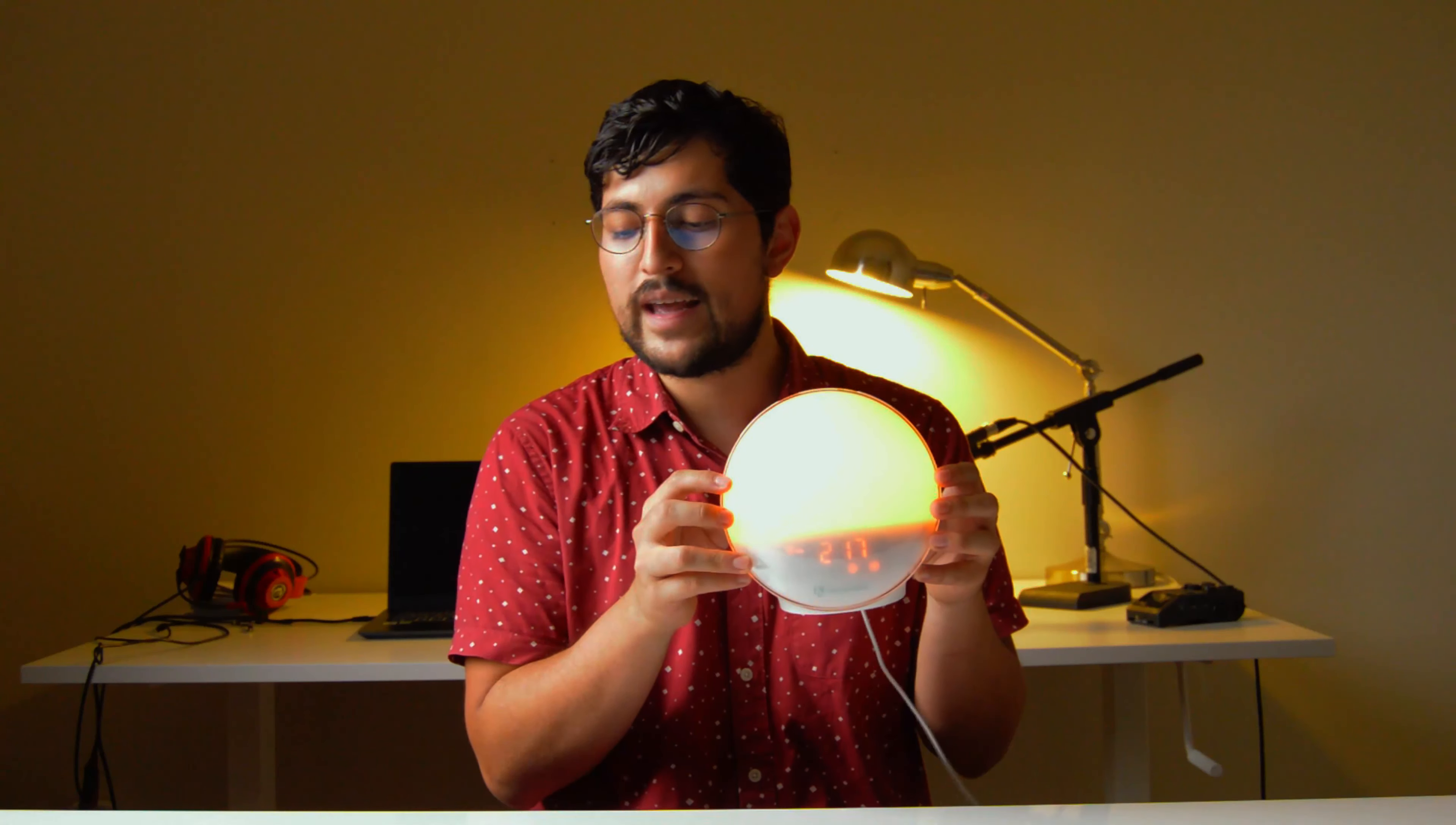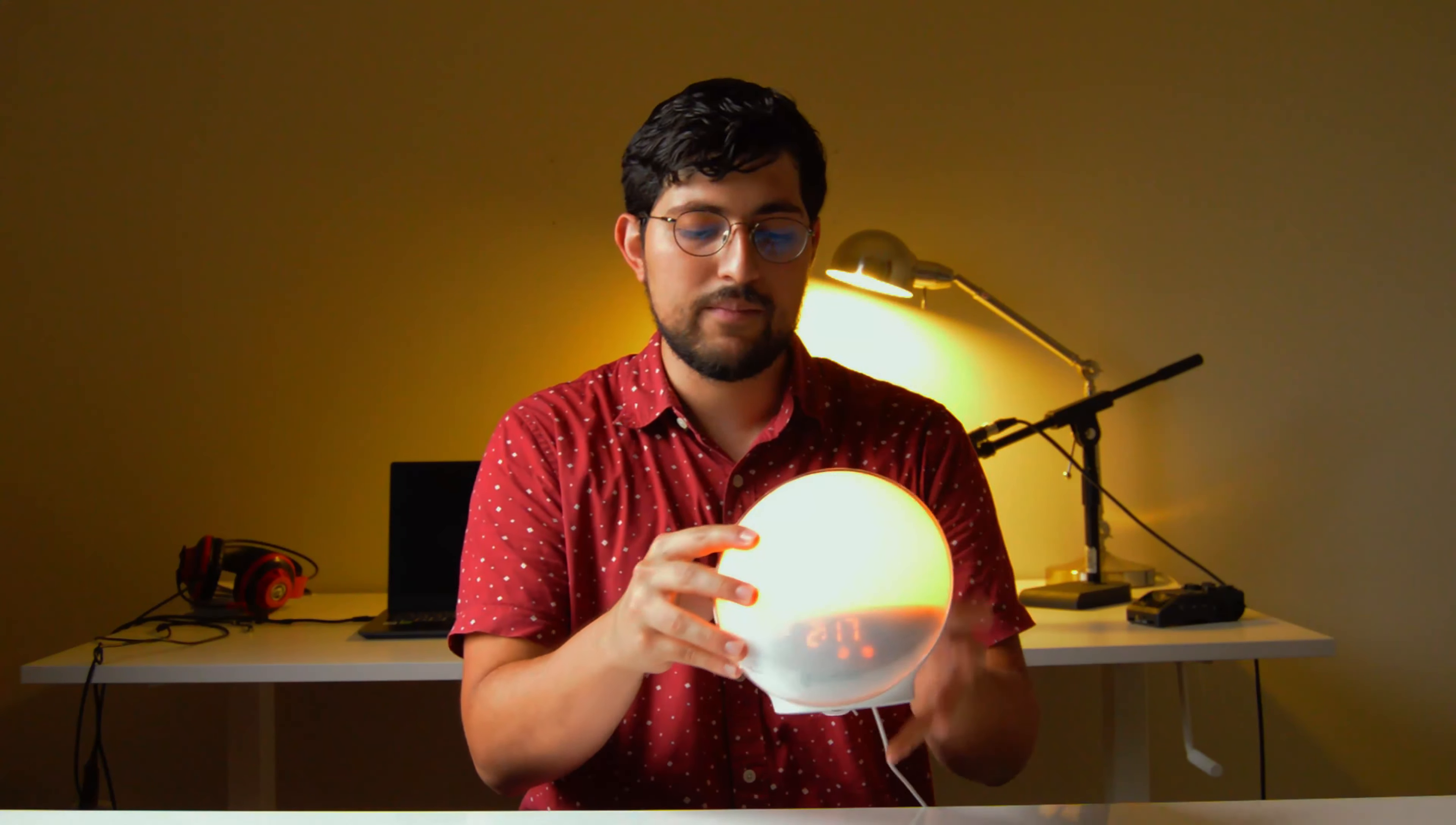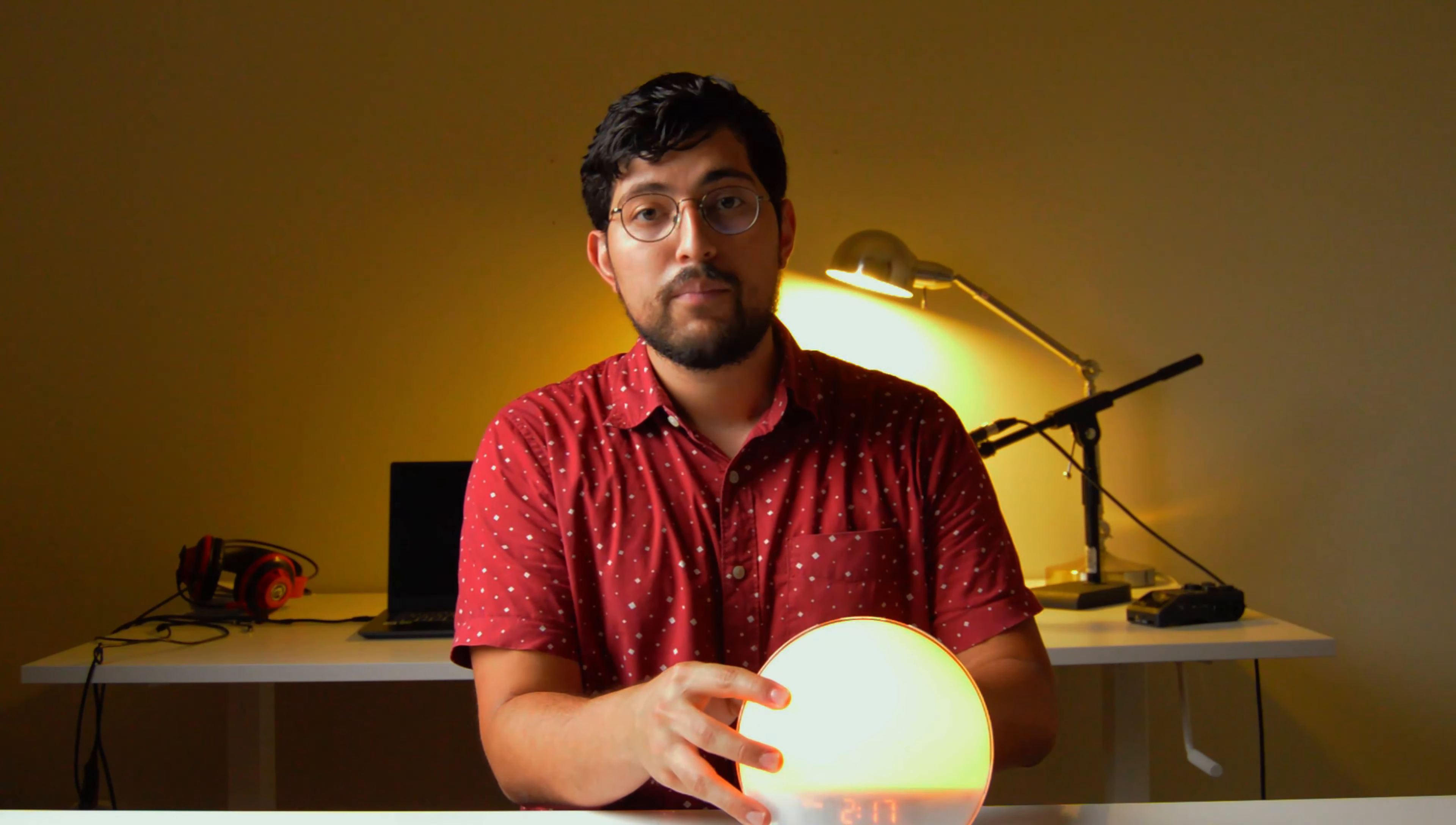As you see, this device right now is illuminated because in about three minutes it's going to make a sound. This is my alarm for 2:20 PM. I don't have an alarm for 2:20 PM, this is just for demonstration purposes. But the best way to use the device is with a smartphone.